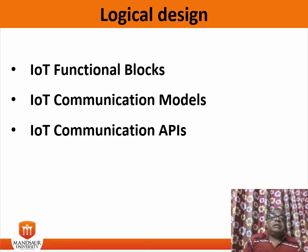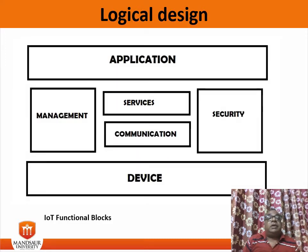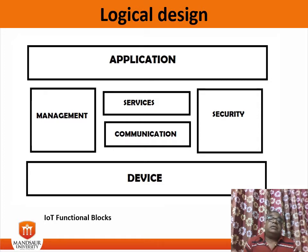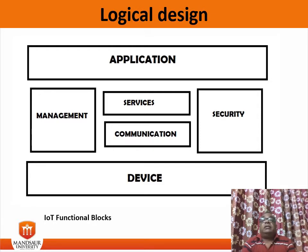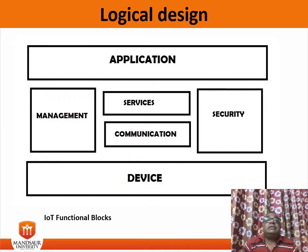Now let's look at IoT functional blocks one by one. This diagram shows the IoT functional block. An IoT system comprises a number of functional blocks that provide the system capabilities for identification, sensing, actuation, communication, and management. These functional blocks are: device, communication, services, management, security, and applications.